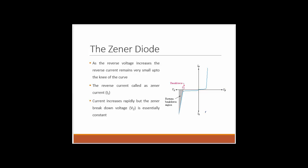Let's look at the characteristics of the Zener diode and find out what Zener breakdown means. The characteristics are very similar to a normal diode — in the forward region it still works as a normal diode. In the reverse bias, as the reverse voltage increases, the reverse current remains very small up to the knee of the curve. That reverse current is called the Zener current, or IZ.